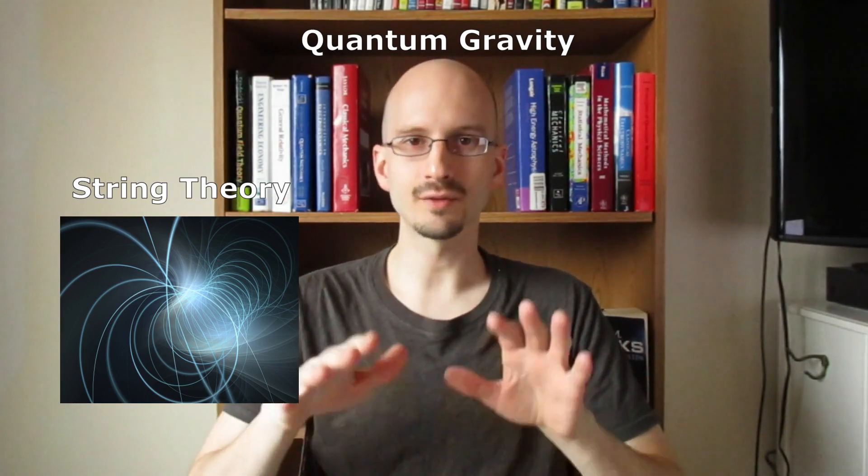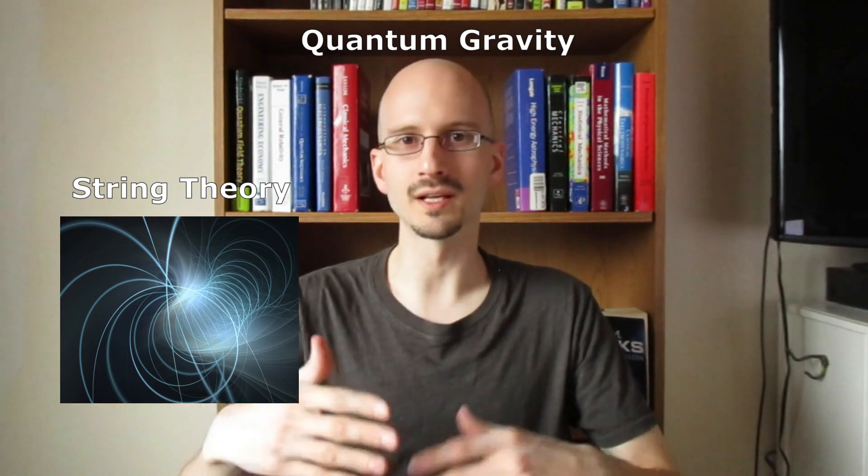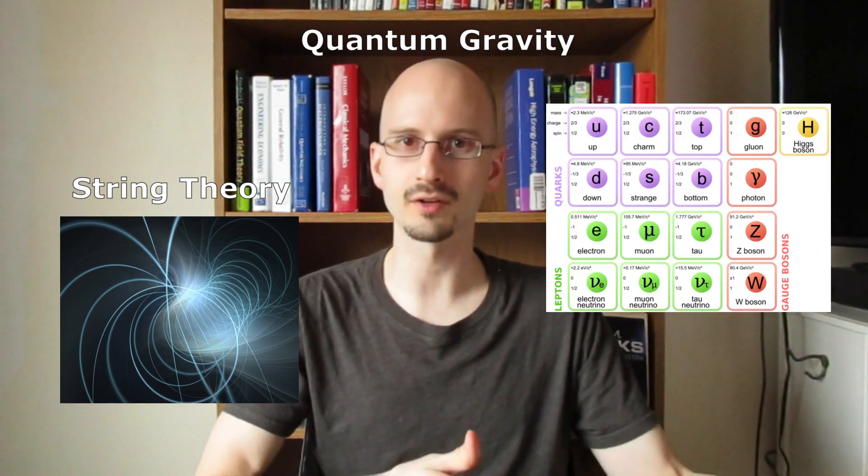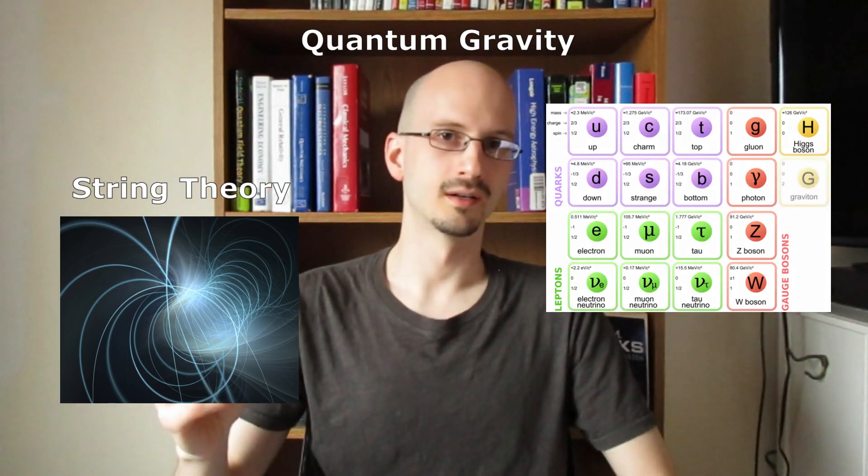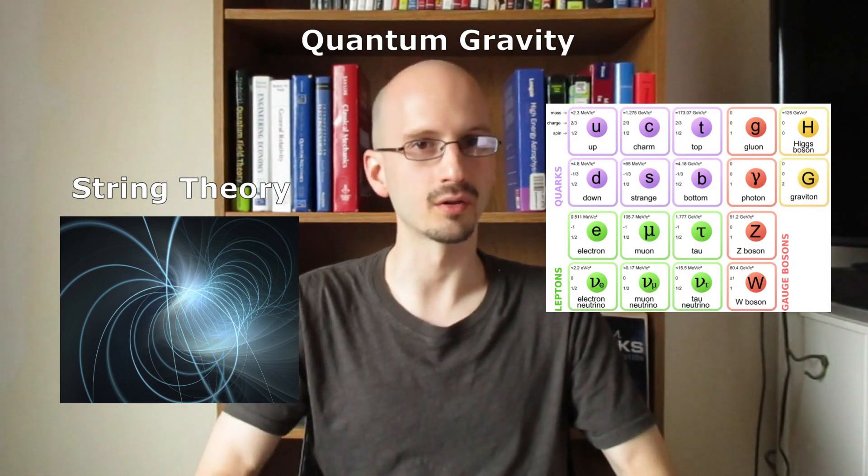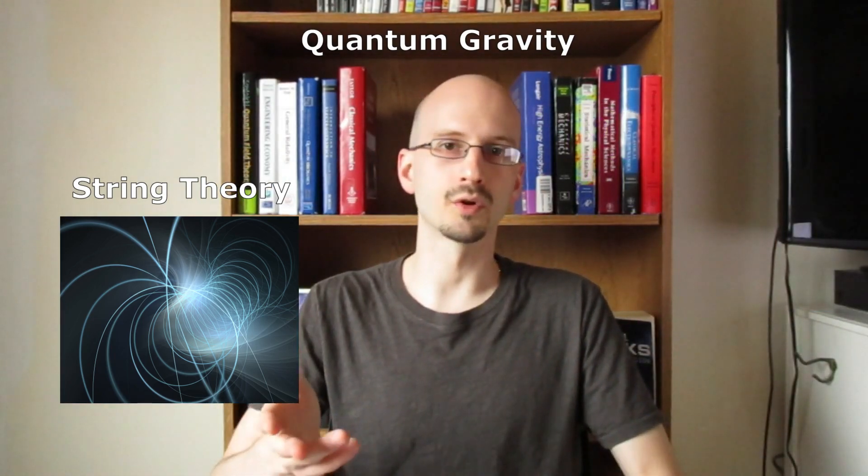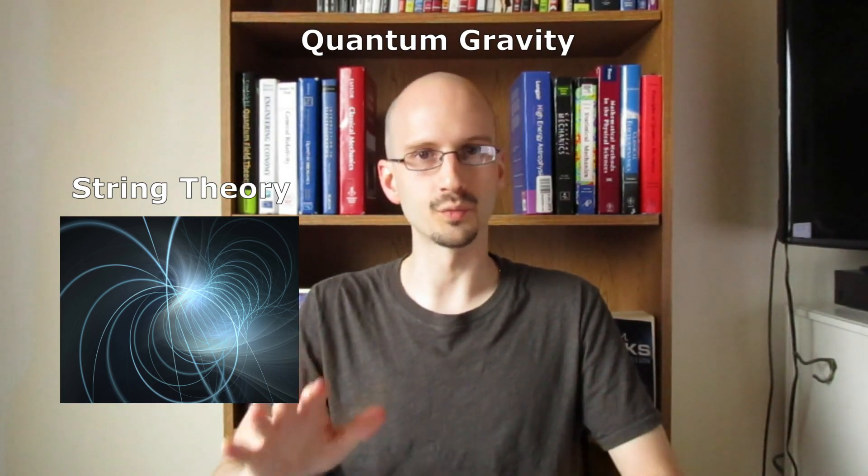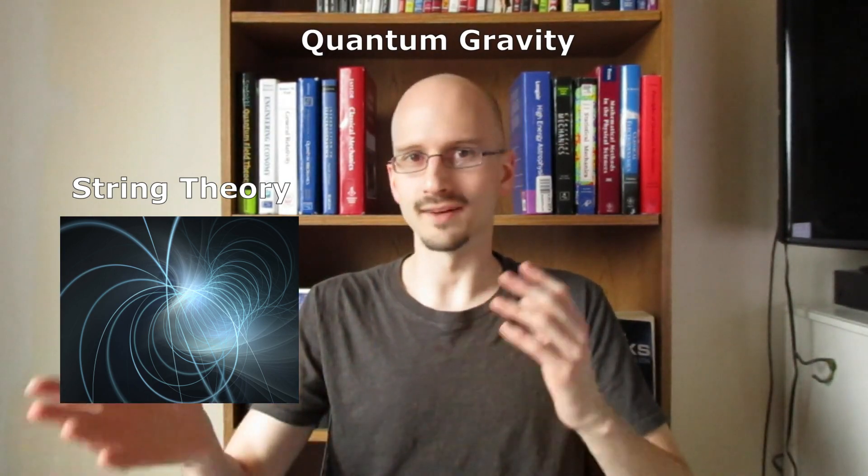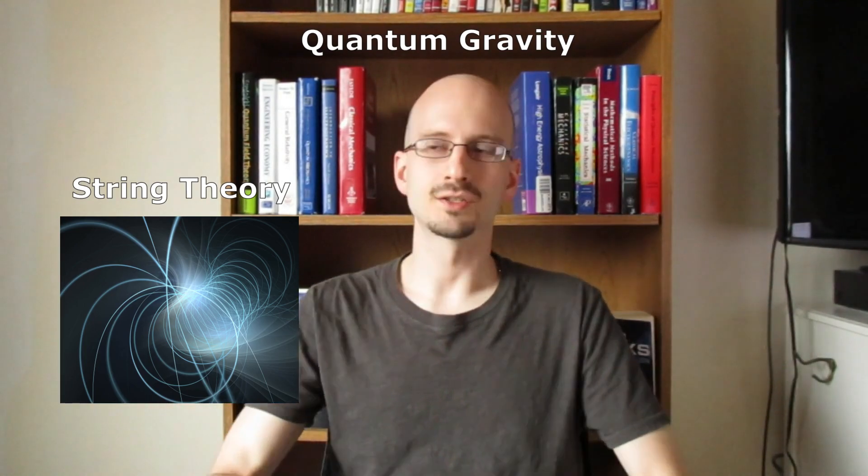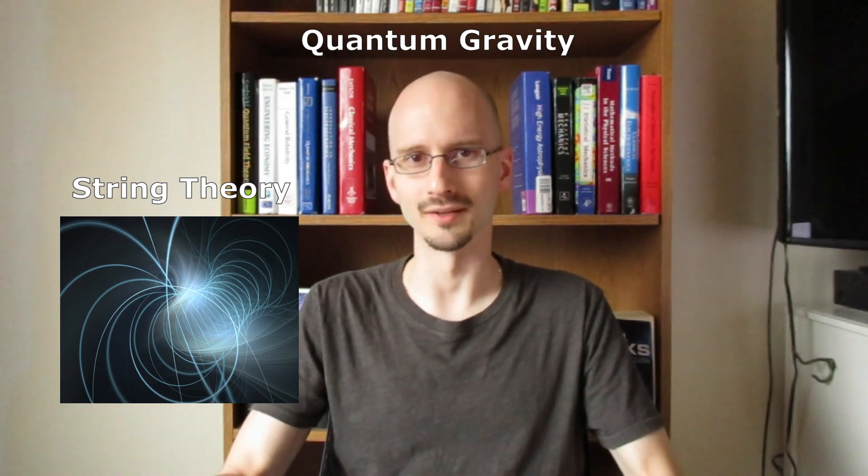Number one is string theory, which models particles not as infinitesimal dots, but as one-dimensional strings. Instead of being both particle and wave, particles are both string and wave. If we do the math, not only do we find we get all the particles we know about from the standard model of particle physics, but we get one more: a graviton, a particle of gravity. Unfortunately, string theory requires 10 dimensions in order to work, and every possible way of hiding all those extra dimensions gives us a different possible universe. So it's really extremely hard to test string theory.